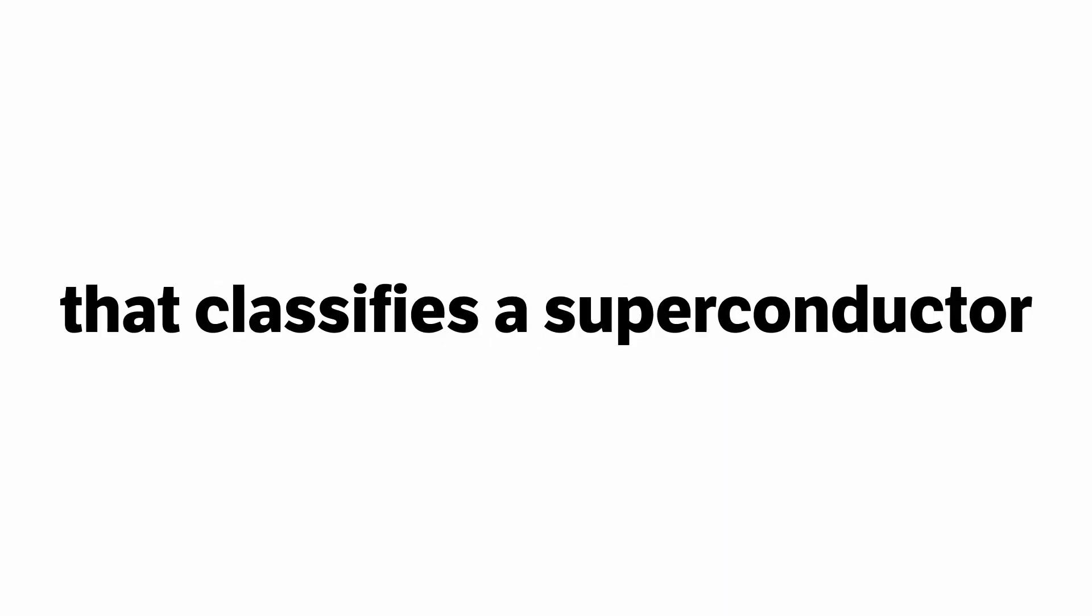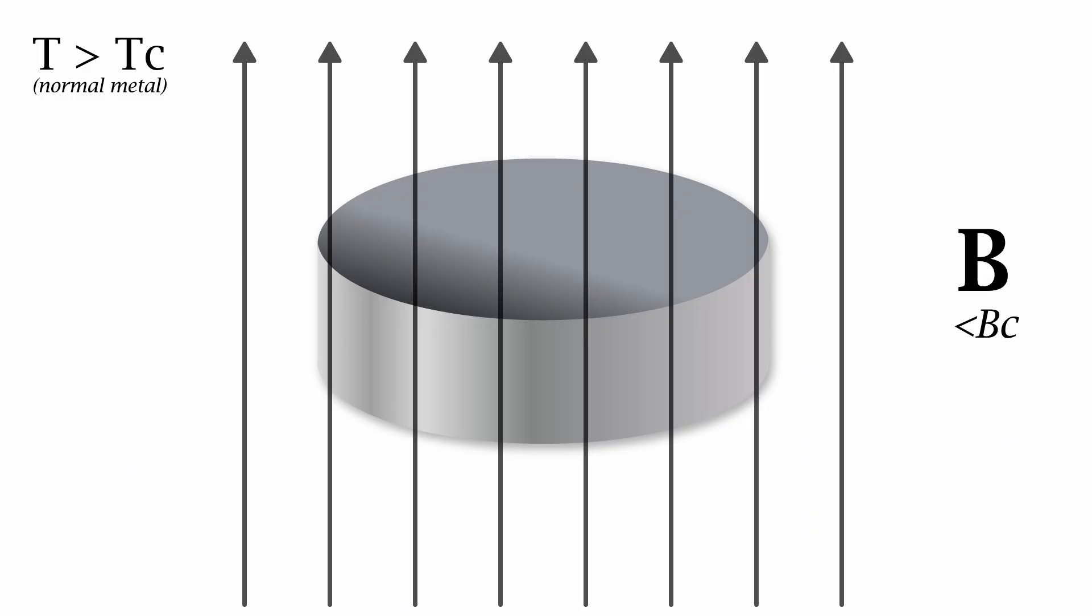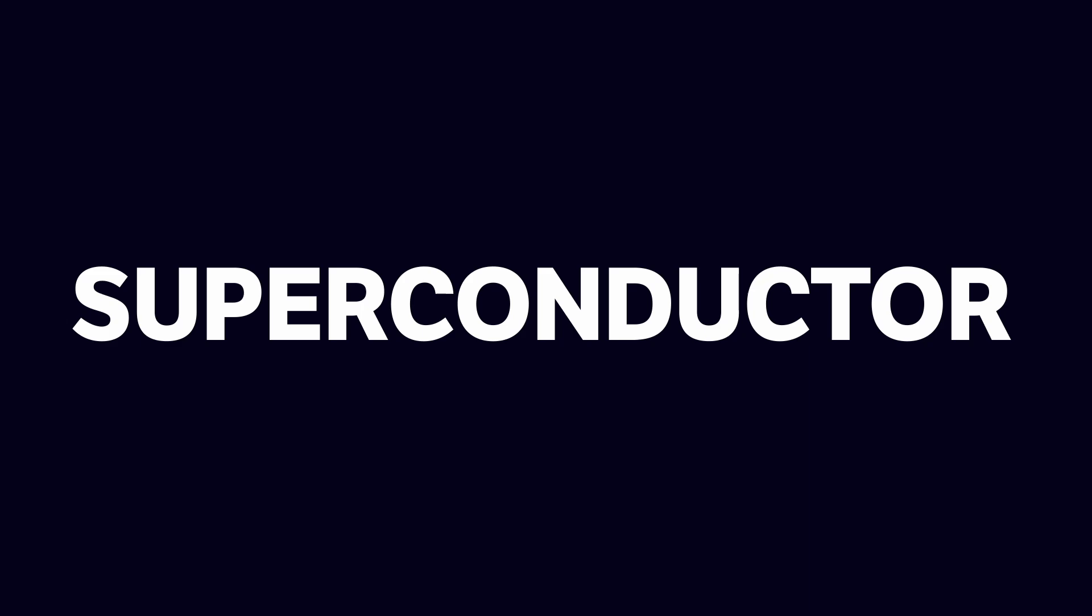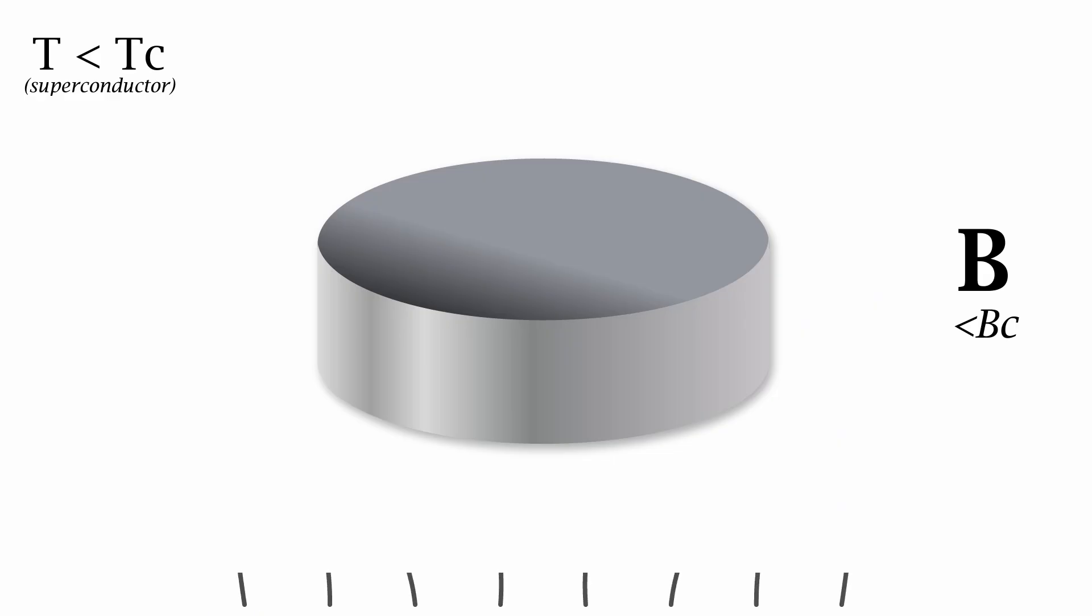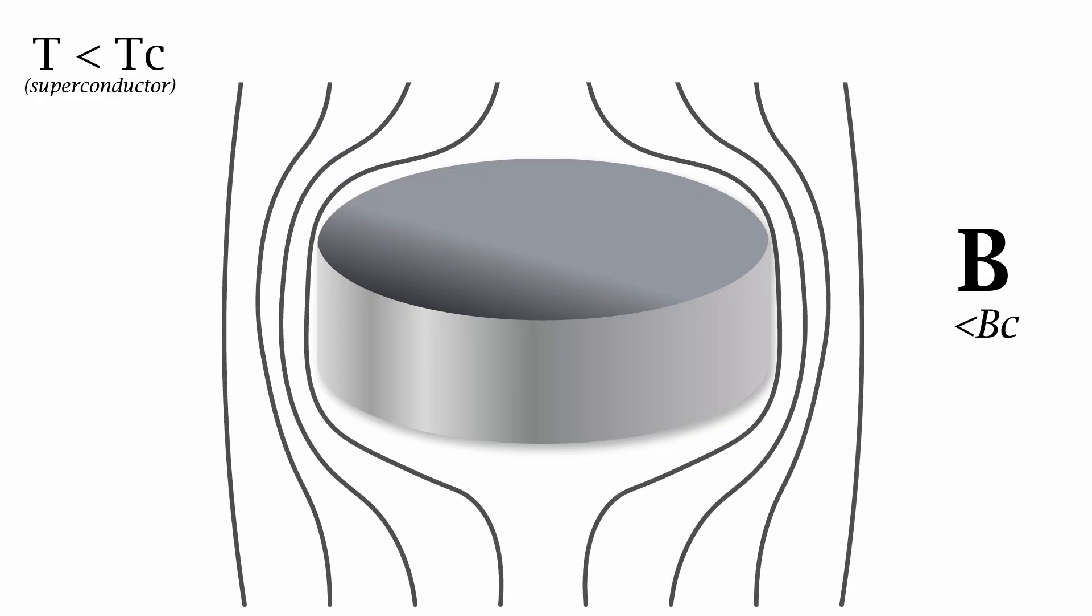But first there is one other effect that classifies a superconductor. And that is that inside a superconductor there is no magnetic field. Superconductors expel all magnetic fields forcing the magnetic field to go around the superconductor. An effect known as the Meissner effect.